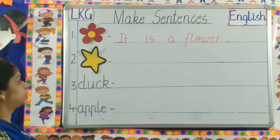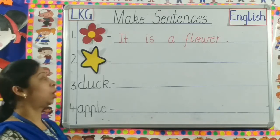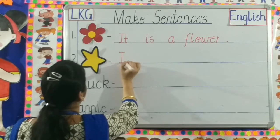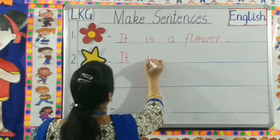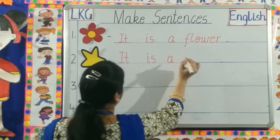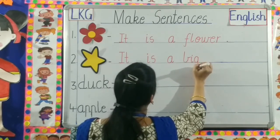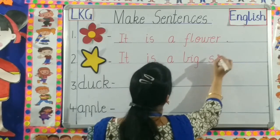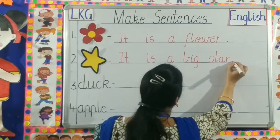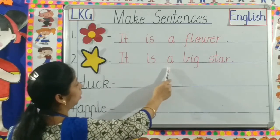It is a flower. Number two — star. Can you make a sentence with the picture star? Yes, let us write the sentence. I-T, It. I-S, Is. A. B-I-G, Big. S-T-A-R, Star. Full stop. It is a big star.